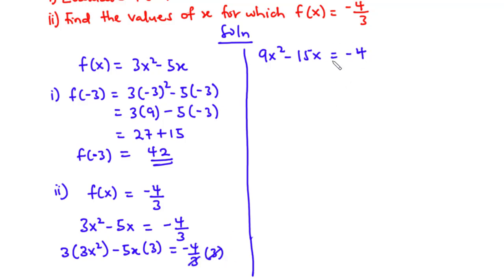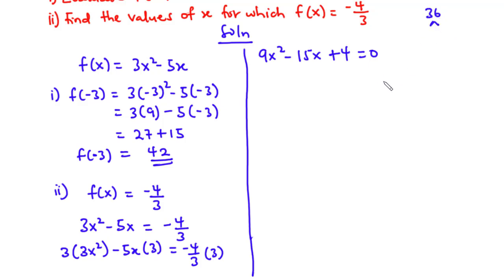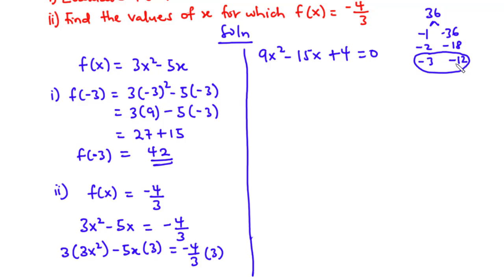We transpose negative 4 to the left-hand side, giving 9x squared minus 15x plus 4 equals 0. Since we have a quadratic equation, we multiply the coefficient of x squared by the constant: 9 times 4 is 36. We look for factors of 36 that multiply to 36 and add up to negative 15. Negative 3 and negative 12 work, since negative 3 minus 12 equals negative 15.